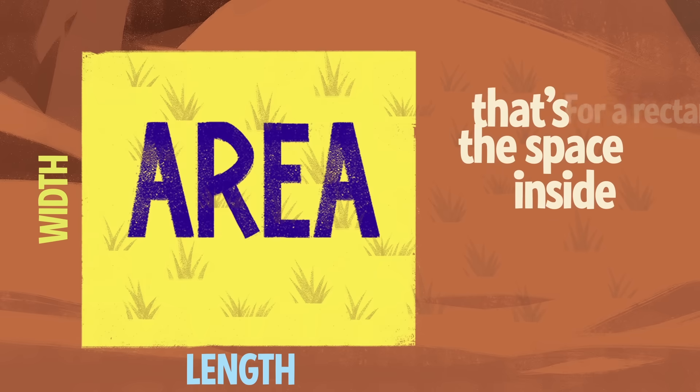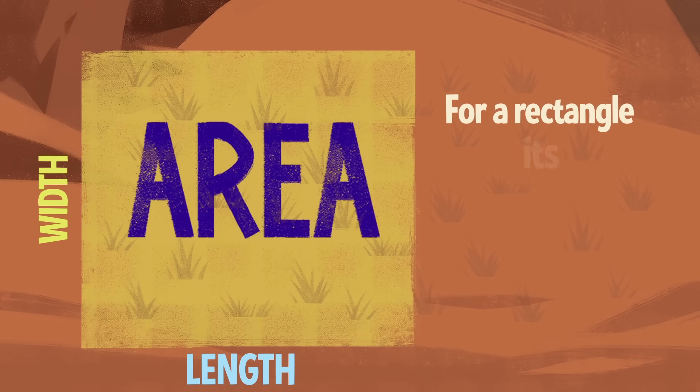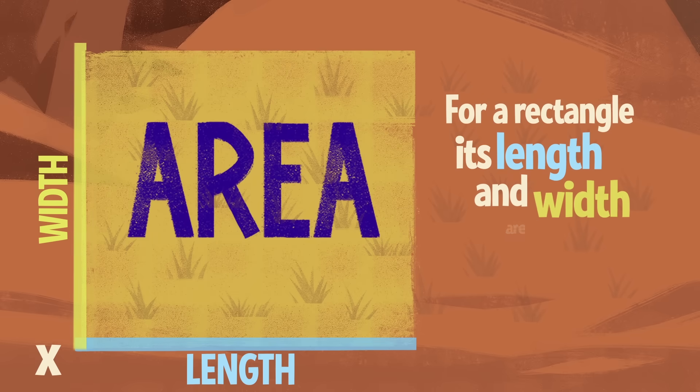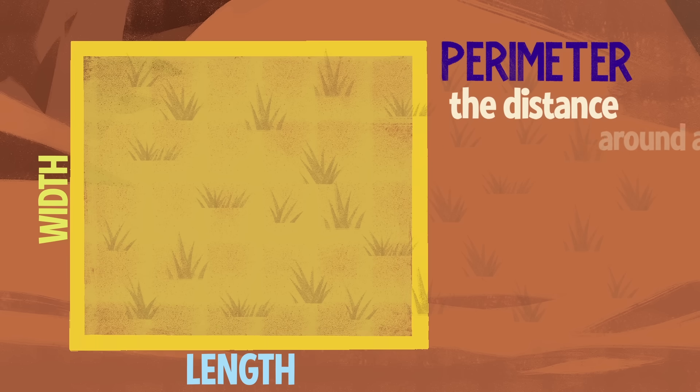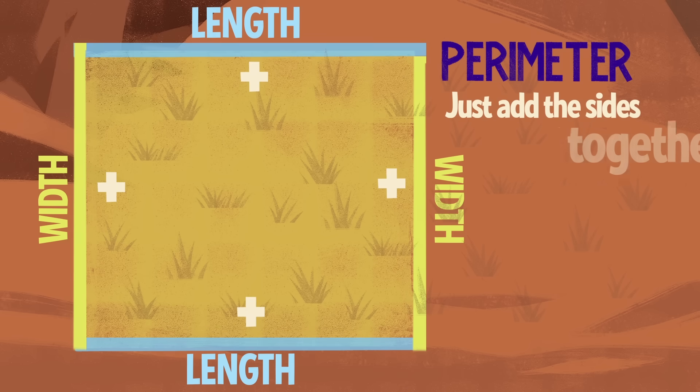With the area, that's the space inside. For a rectangle, it's length times width. And perimeter — the distance around a shape — just add the sides together and then you'll be great.